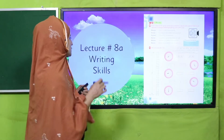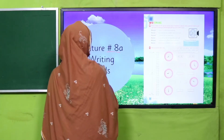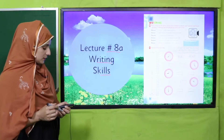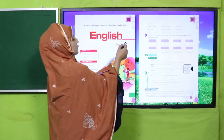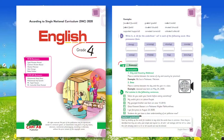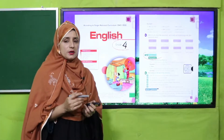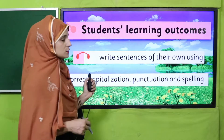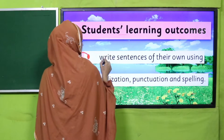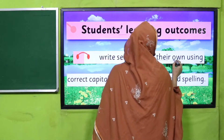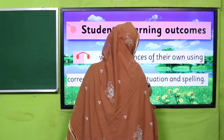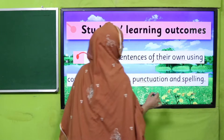Today's lecture is Lecture 8: Writing Skills. Today we will learn about writing skills. In English for Grade 4 we have already learned about punctuation — I hope you remember it. If you don't, you may watch that video lecture again. Our today's learning outcomes are: write sentences of their own using correct capitalization, punctuation, and spelling.